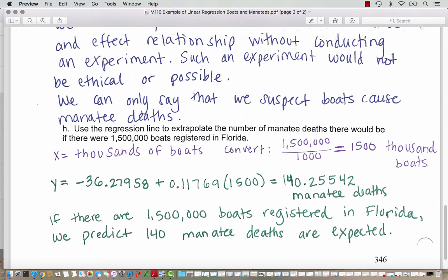Our prediction or our extrapolation, since we're predicting outside the range of x values, is to say if there are 1,500,000 boats registered in Florida we predict 140 manatee deaths are expected. Scientists or people concerned about manatees would use this data to try to help curb or limit the number of manatees affected. And potentially they would limit the number of boat registrations if they were concerned about manatees being endangered. What we see in this example is how we can use lines of best fit to make predictions and extrapolations for data points slightly outside our data set.